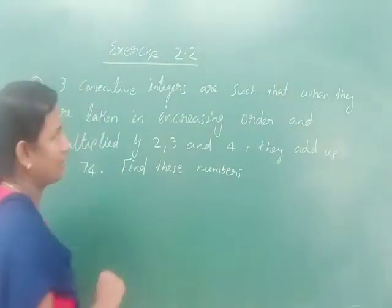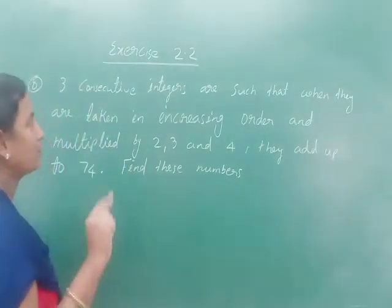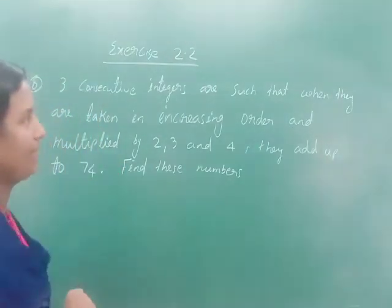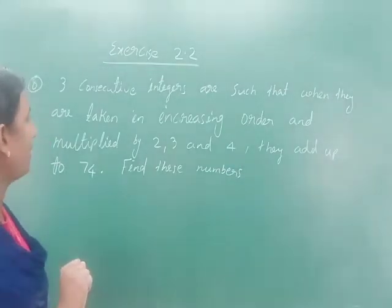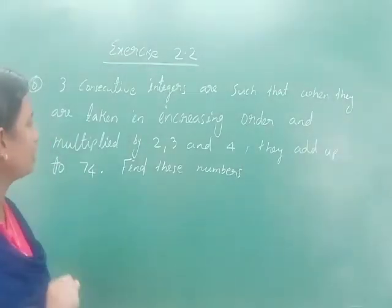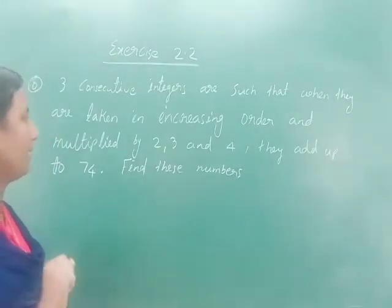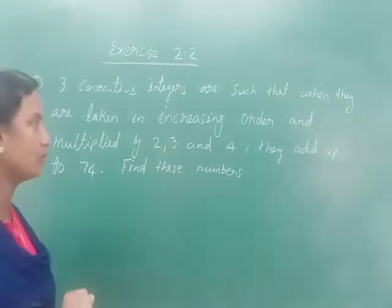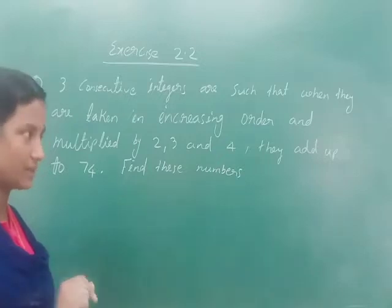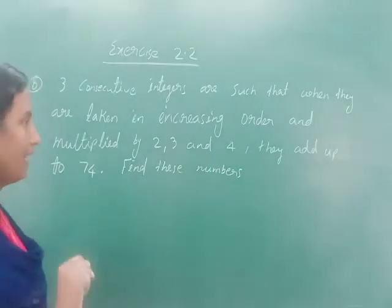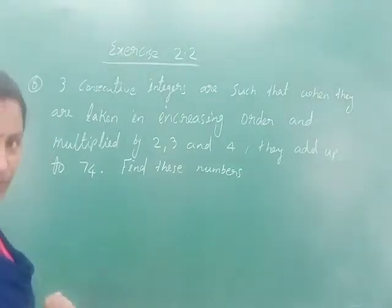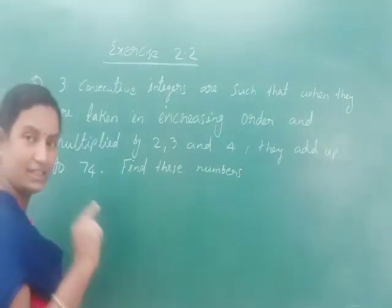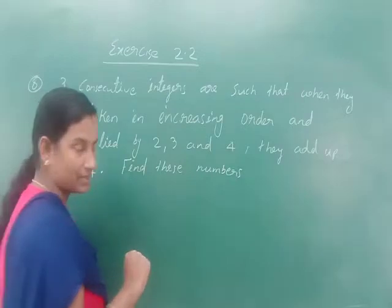Question: 3 consecutive integers are such that when they are taken in increasing order and multiplied by 2, 3, and 4 respectively, they add up to 74. Find these numbers.